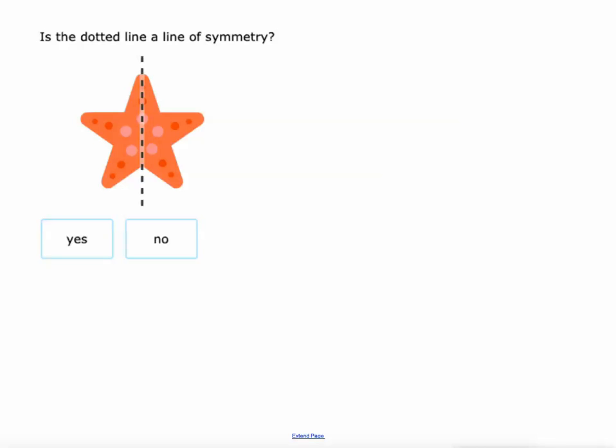Is this dotted line a line of symmetry? In other words, if we take this starfish and we fold it over that line, will it match up perfectly? And in this particular one, that's a big yes. It is the exact same on both sides.